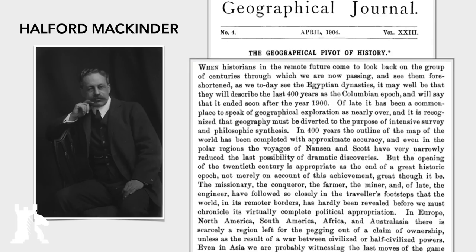We are now going to engage with Sir Halford Mackinder and his lecture 'The Geographical Pivot of History,' which is still today treated by many geopolitical thinkers as foundational work in modern geopolitics, even though he didn't use the word geopolitics. What he said was that as we approach the year 1900 we are entering a new stage in human history. The previous stage was the Columbian epoch — the age of exploration from around the 1500s — and that era ended around 1900, because by then virtually all of the world's physical space had been completely politically appropriated.